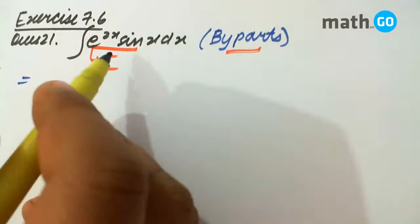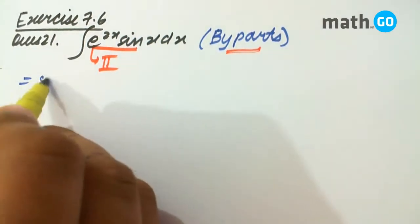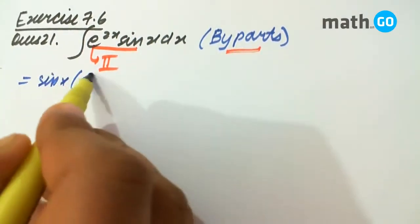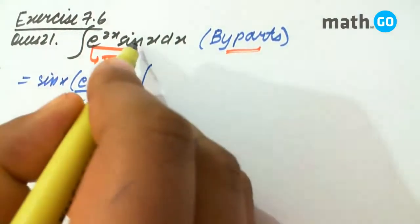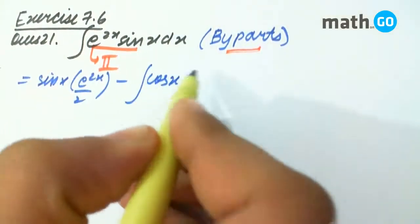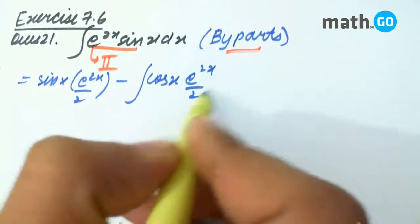Applying the formula, we get sin x is constant, e to the power 2x by 2, minus sin x derivative, that is cos x, into e to the power 2x by 2 dx.